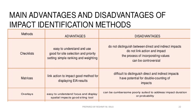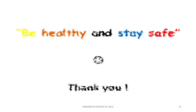Here are the advantages and disadvantages of these three methods. Checklist advantages: easy to understand and use, good for site selection and priority setting, and allows simple ranking and weighting. Checklist disadvantages: does not distinguish between direct and indirect impacts, does not link action and impact, and incorporating values can be controversial. Metrics method advantages: links action to impact and is a good method for displaying EIA results. Metrics disadvantages: difficult to distinguish direct and indirect impacts, and has potential for double counting of impacts.